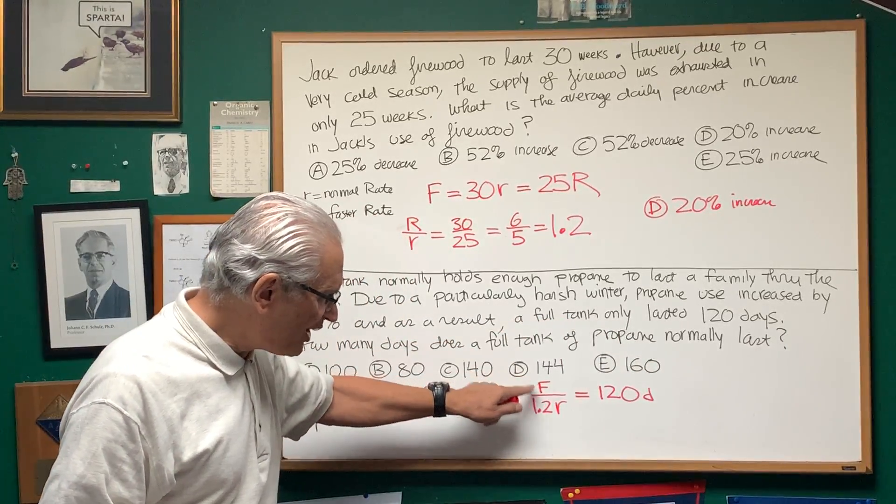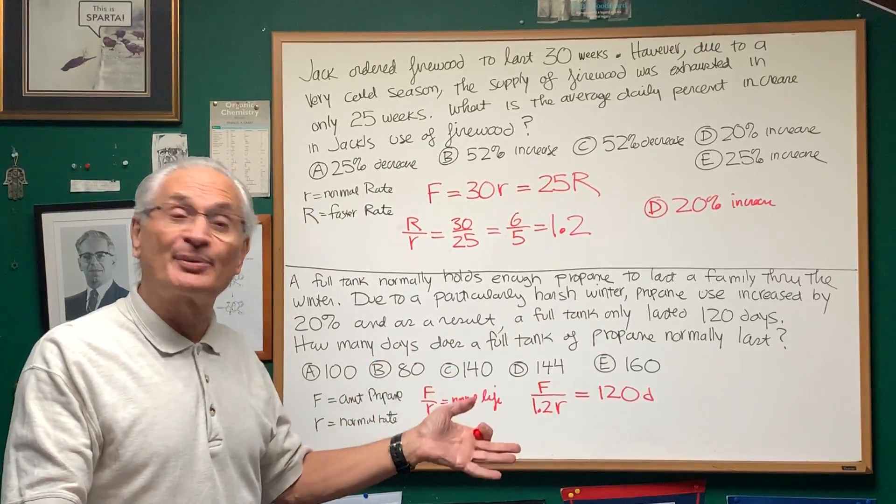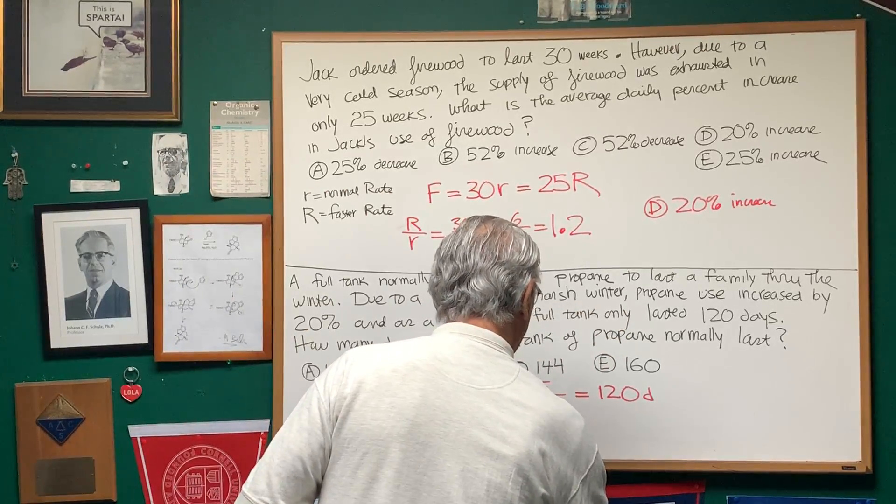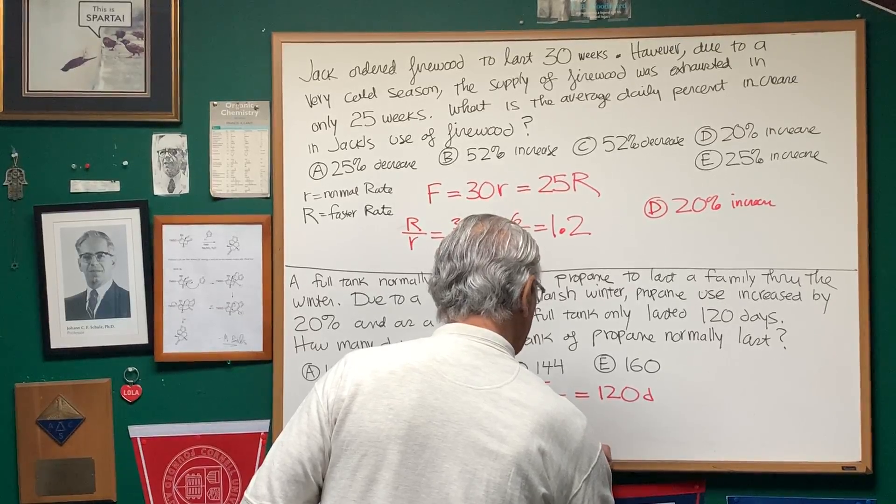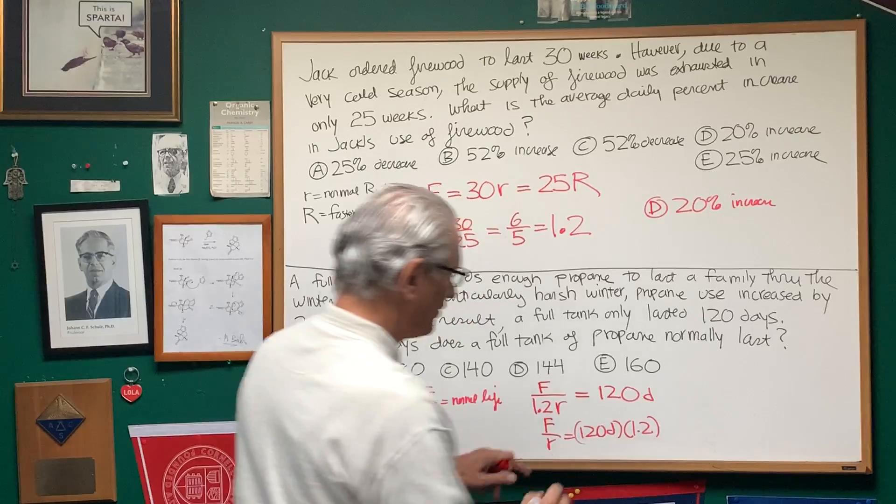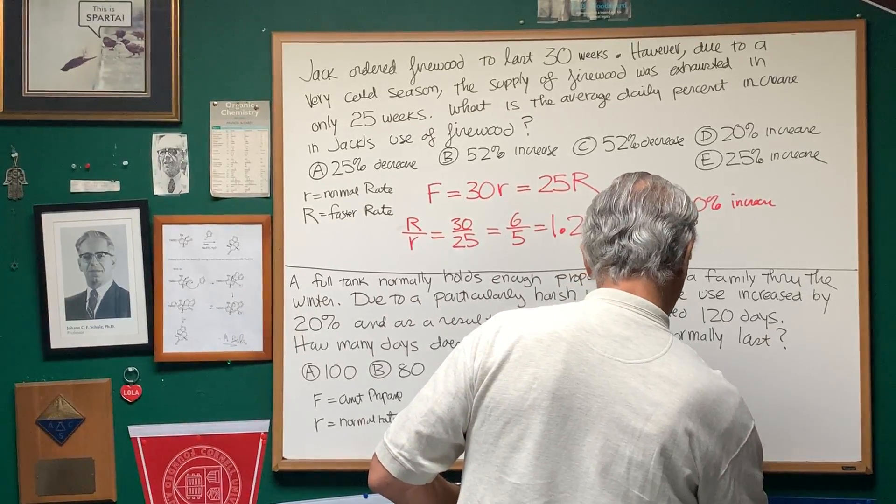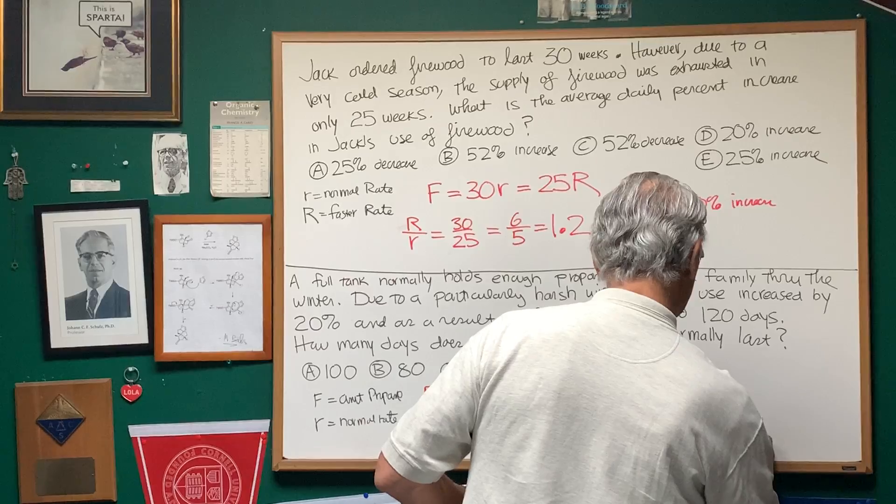Well, look at this equation. How do I solve for F over r? We multiply both sides of the equation by 1.2. So we get the value F over r equals 120 days times 1.2. Well, I know that 12 times 12 is 144. This is going to be 144 days.